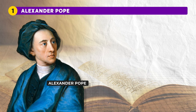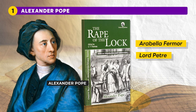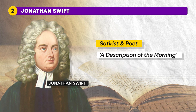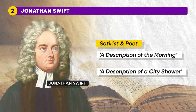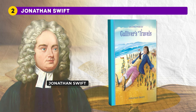Coming back to Pope, his most famous poem is The Rape of the Lock, published in 1712 and revised in 1714. This poem humorously mocks a real-life argument between high society figures — Arabella Fermor and Lord Petre — over a lock of hair. The next author is Jonathan Swift, celebrated both as a satirist and poet. His notable poems include A Description of the Morning, showcasing his keen observations of everyday life, and A Description of a City Shower, a satirical critique of urban decay. Swift's greatest known work is Gulliver's Travels, a masterpiece of satire and social commentary, where through the fantastical voyages of Lemuel Gulliver, Swift offers critiques of politics, society and human nature.